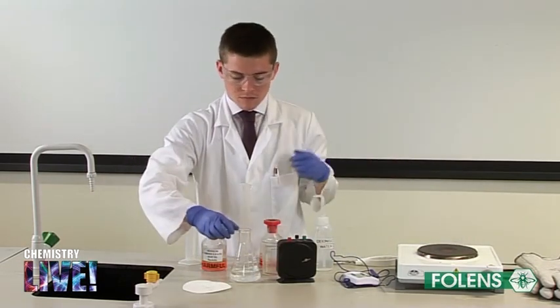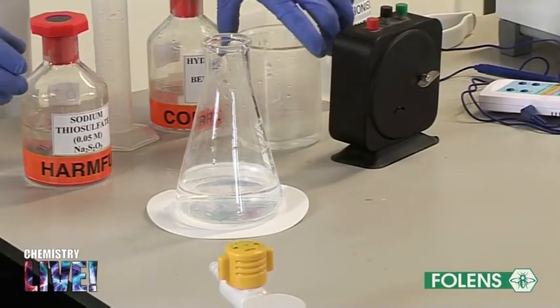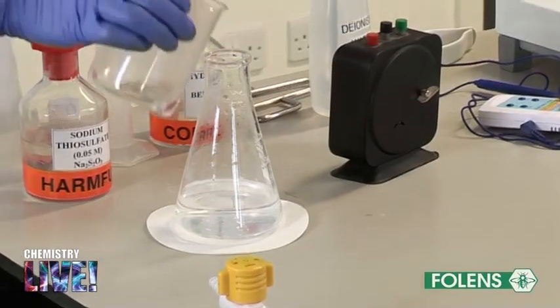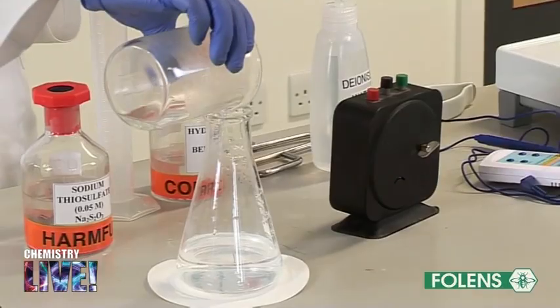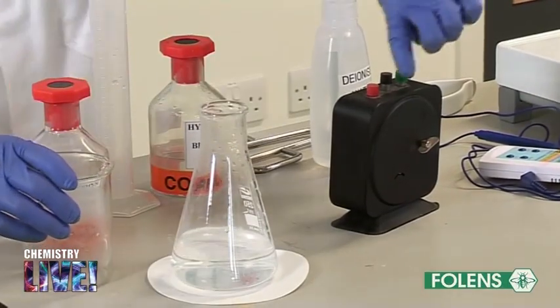Place the conical flask on top of the cross. Add in the 10 centimeters cubed of dilute hydrochloric acid to the conical flask and measure the time it takes to obscure the cross.